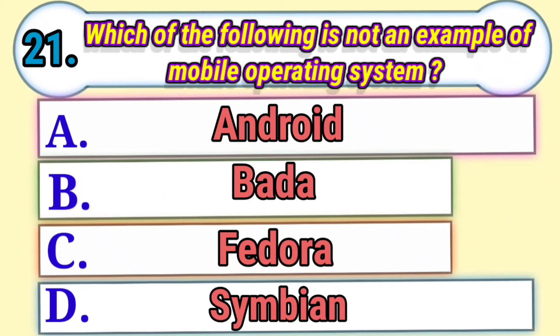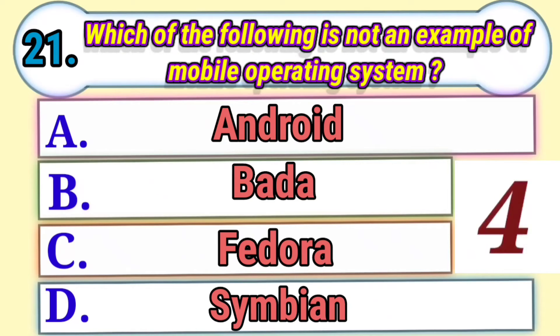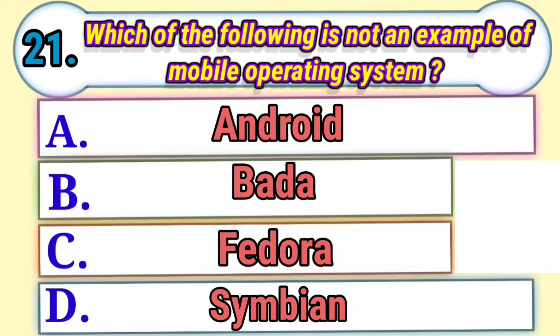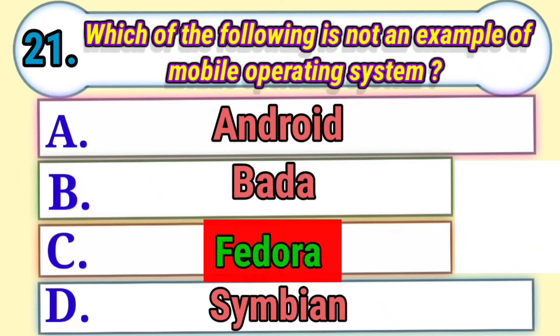Which of the following is not an example of a mobile operating system? Answer: Fedora.